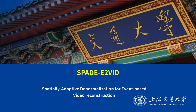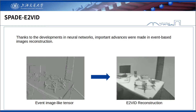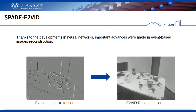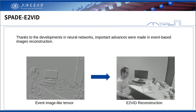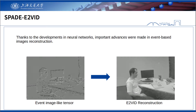We want to present SPADE-E2VID, a recurrent neural network for event-based video reconstruction. Thanks to the developments in neural networks, important advances were made in event-based image reconstruction.